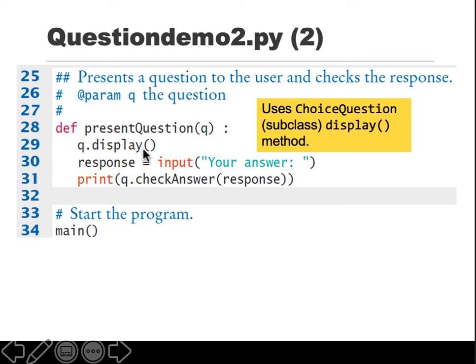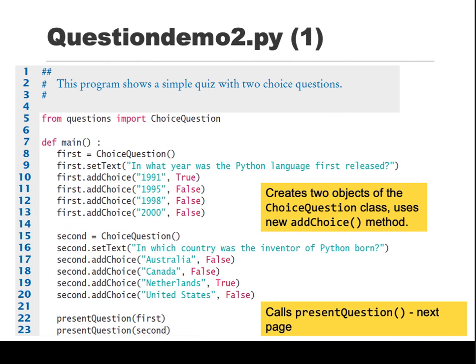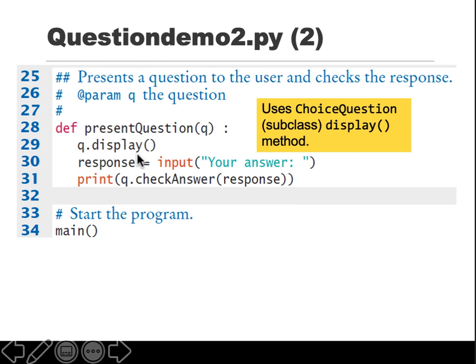The display function is called for which class? Since first is the object of subclass called ChoiceQuestion, it calls the display function of the subclass. Then it waits for the user answer, whatever the user provides, check the answer, and so on.